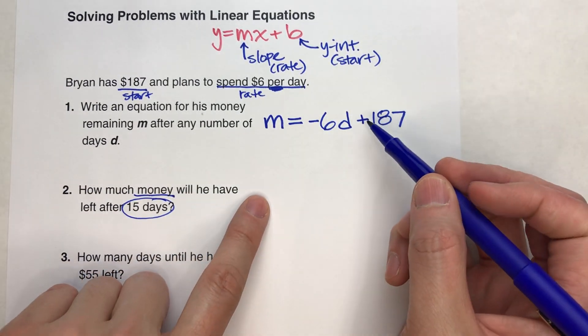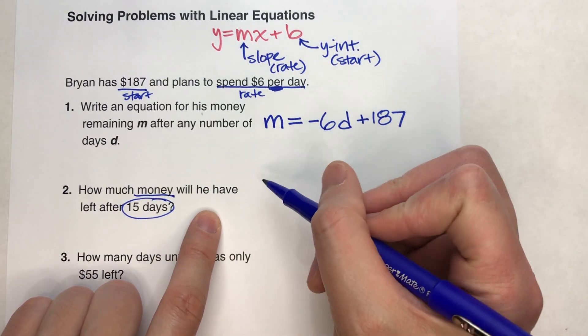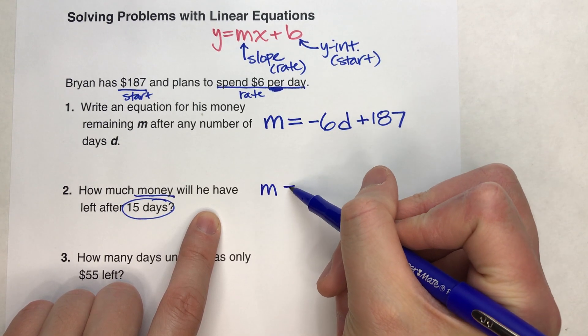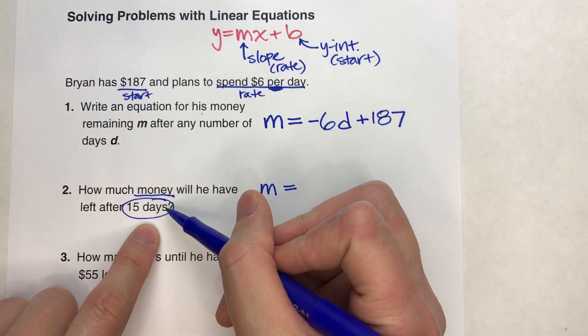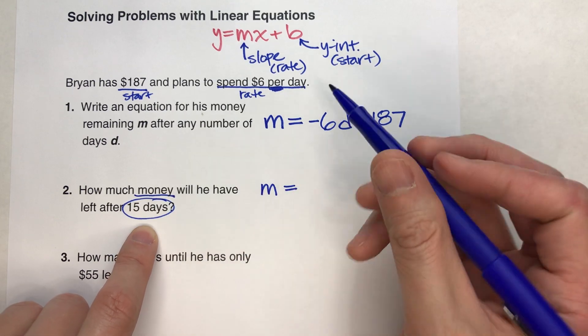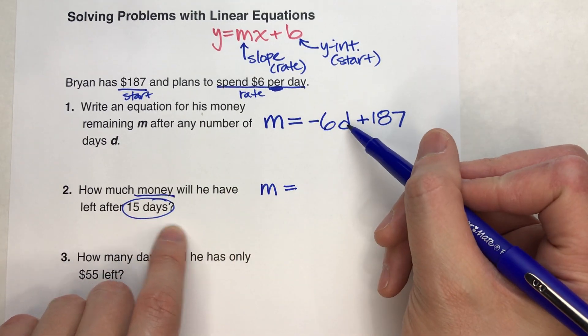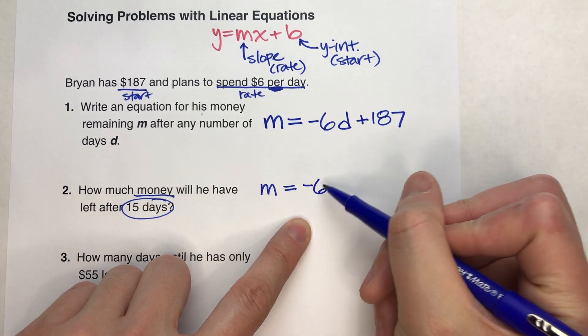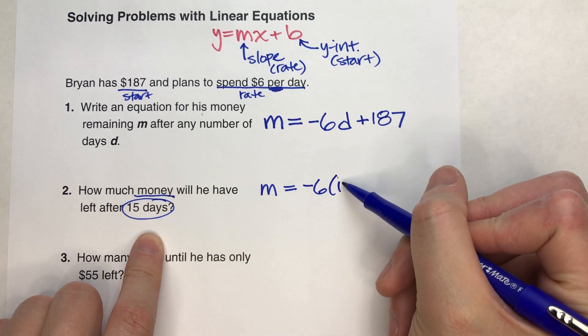So in our equation here, we don't know how much money he has, so I'll leave that. m equals. But we do know it's going to be after 15 days. So we're going to replace d in our equation with 15 because that's the number of days.